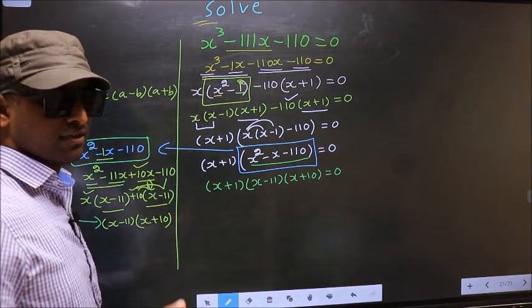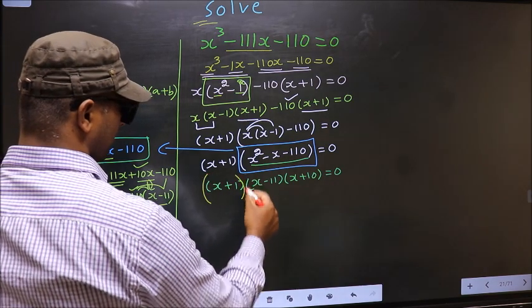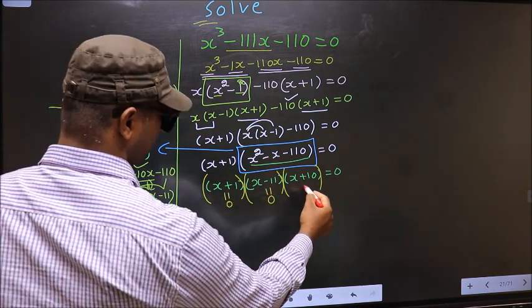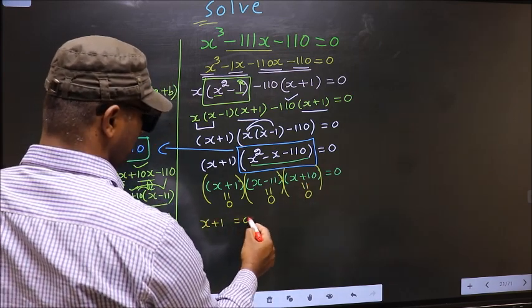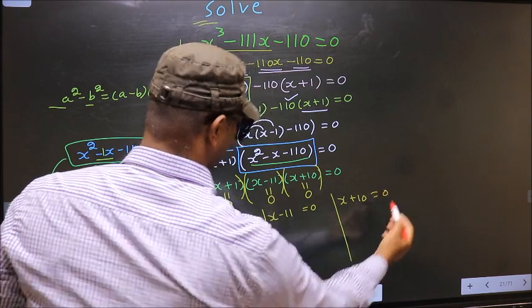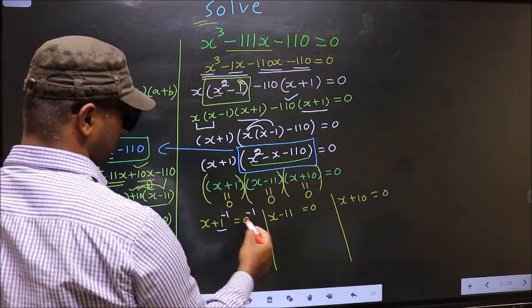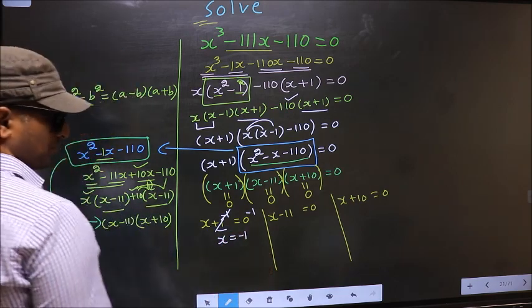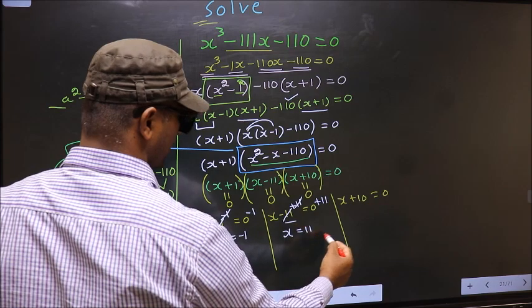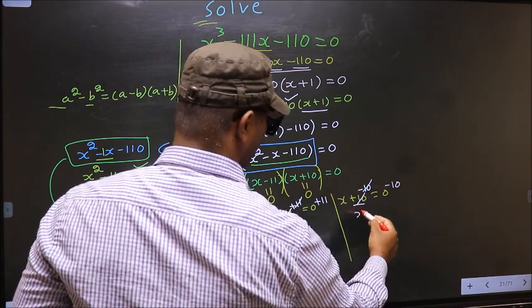They told us to solve, which means we should get the values of x, and here we got a product of brackets equal to zero. So to get x values we equate each bracket to zero: x + 1 = 0 gives x = -1; x - 11 = 0 gives x = 11; x + 10 = 0 gives x = -10.